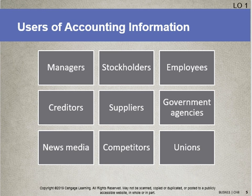Similar to employees, unions are often looking at the health of a company to give them ammunition going into contract negotiations, asking for better pay or better benefits. If the company is not doing well, that would be a time where they may hold off on some of those negotiations until business turns around. But those are the types of stakeholder groups that might be interested in the accounting information of a company.